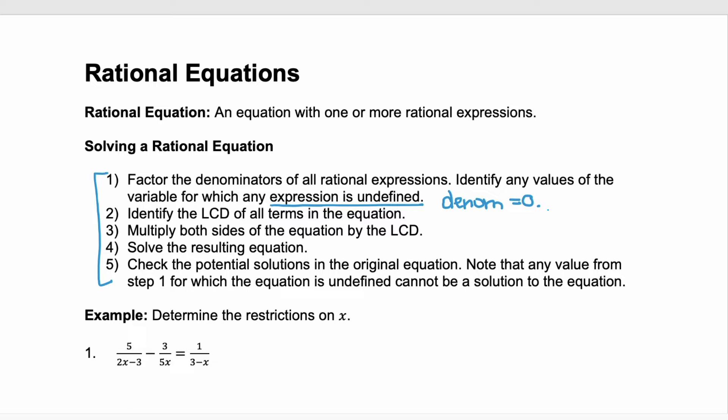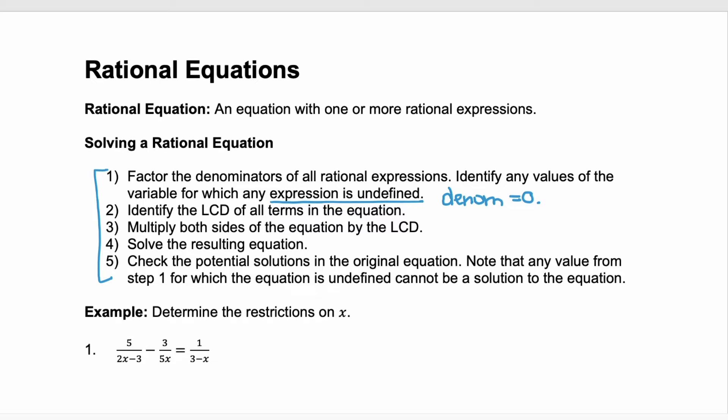First you're going to factor, then you're going to identify the LCD so that you can simplify. We're going to multiply each side by that LCD and that gets rid of the fractions — the part that everybody hates. We usually end up with a linear type equation that we can solve. And then step five, we check our solutions.